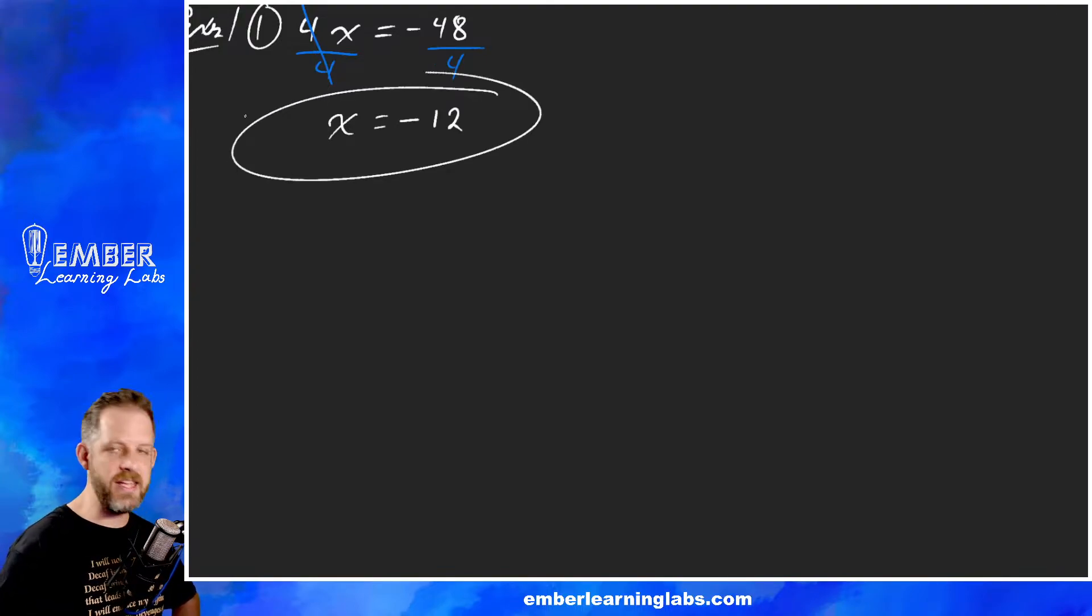Example number two. This one is going to be y over four equals negative eight. Now we have to remember something else kind of like remembering that a number right next to a variable is multiplication. We have to remember here that a fraction is the same as dividing. So this four is divided into the y.